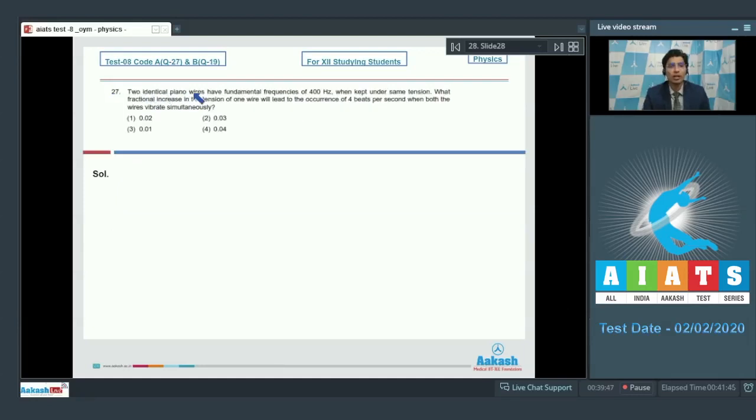Question 27 says two identical piano wires having fundamental frequencies of 400 Hz when kept under same tension, what fractional increase in the tension of one wire will lead to occurrence of 4 beats per second when both the wires vibrate simultaneously.